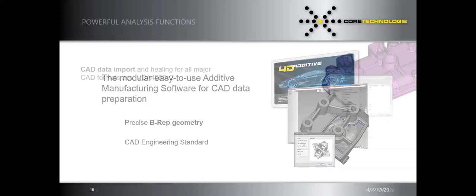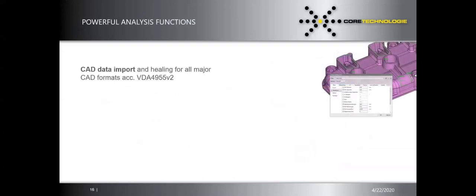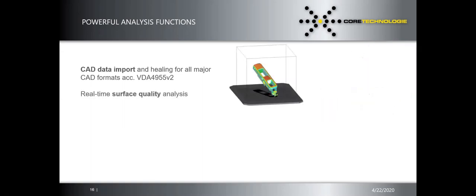Regarding B-rep geometry: from the healing capabilities standpoint, many people talk about healing and stitching free edges or imprecisions in a model. Our core technology — 3D Evolution — brings 10 years of advanced healing capabilities, including VDA (German automotive association) certified advanced healing applied directly to the model.